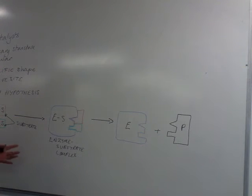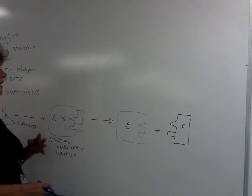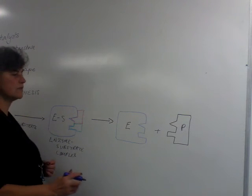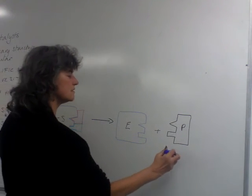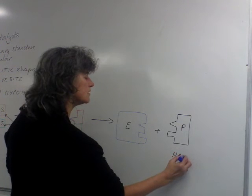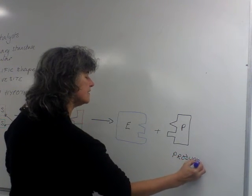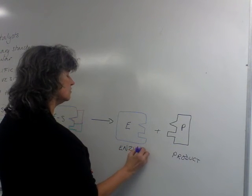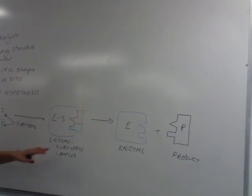The reaction then happens, and we'll go into how that happens by lowering activation energy. And the product is a slightly different shape from the active site. So the product leaves, so this one over here is the product, and it leaves the enzyme intact, unchanged, which is one of the features of a catalyst.